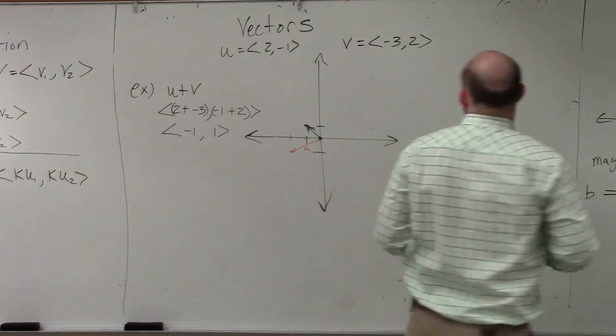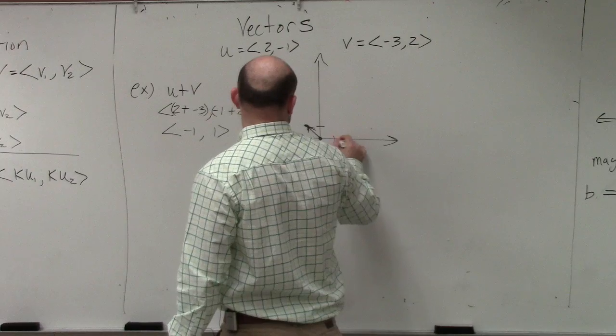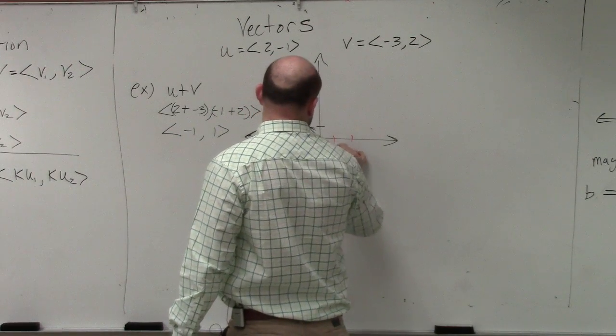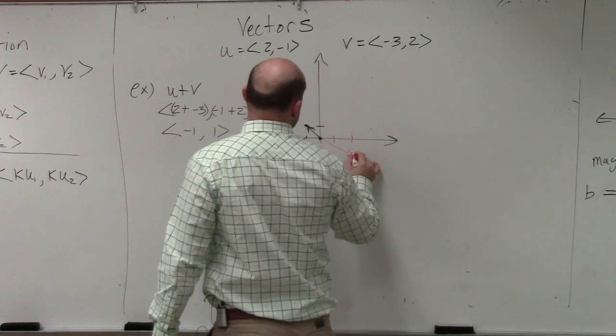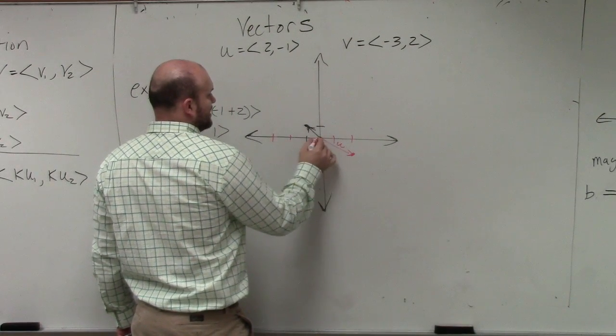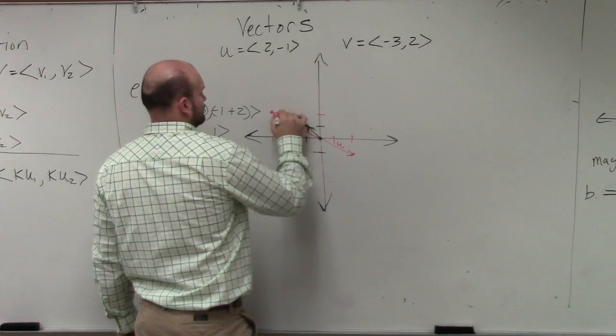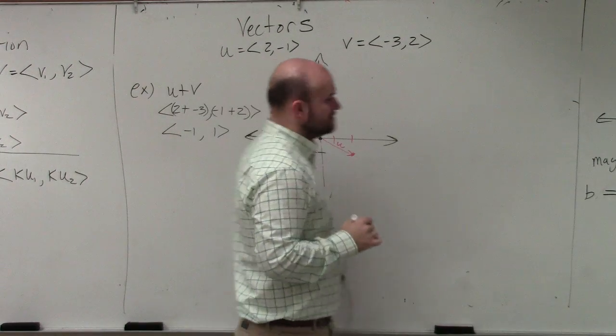And then v is negative 3, positive 2. Does everybody see that?